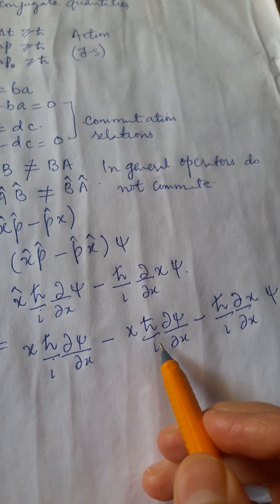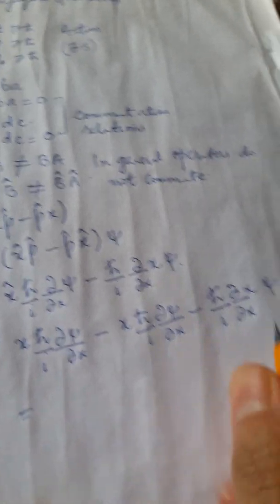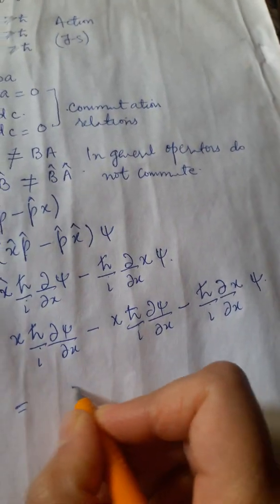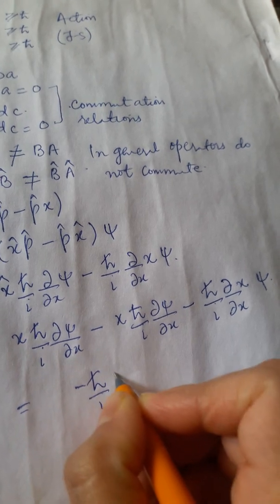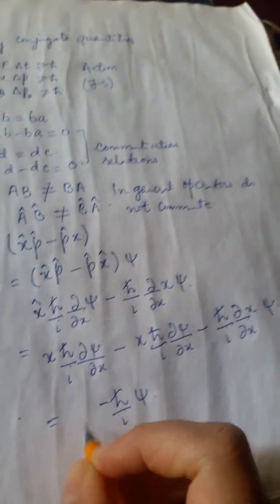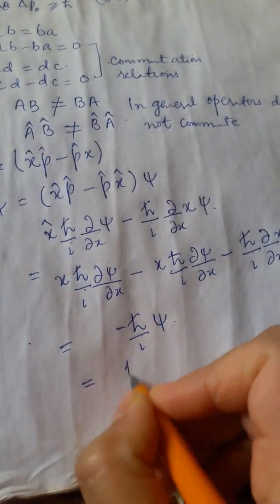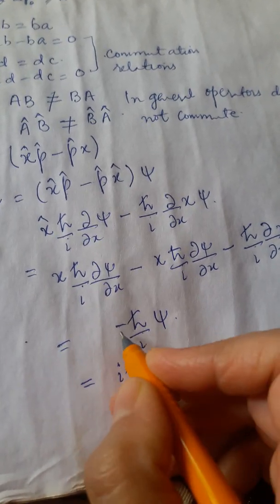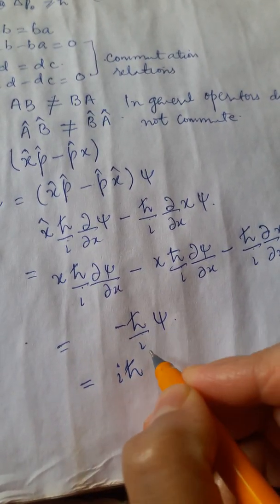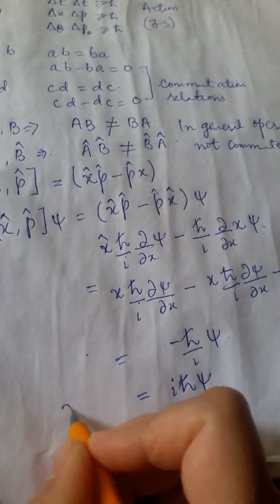Of course, this and these factors are identical and they will cancel. We are left with minus h cross by i psi. So it is h cross or i h cross. Well, this minus sign will go when we have brought this iota upwards and psi. On left side you have this.